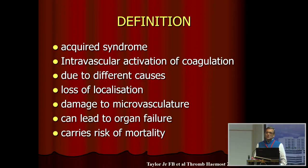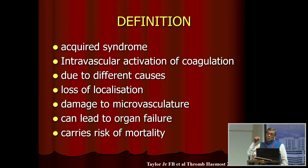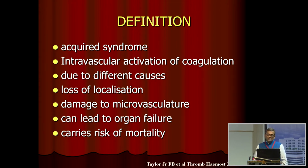DIC is an acquired syndrome — not one diagnosis — of intravascular activation of coagulation proteins due to different causes, where there's a loss or lack of localization, so it's disseminated. It affects the microenvironment of blood vessels, and because it's a coagulation disorder — disseminated intravascular coagulation — it can lead to microvascular damage, organ failure, and therefore carries the risk of severe morbidity and mortality. I would rather call it disseminated intravascular coagulopathy, because you could clot or you could bleed, so coagulation is a milder term.